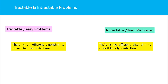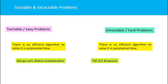For example, merge sort and matrix multiplication are algorithms with polynomial complexity, such as n raised to k or log n. These kinds of algorithms are called tractable problems. On the other hand, the Traveling Salesman Problem and the 0/1 Knapsack Problem have complexities not in polynomial time — for example, the Traveling Salesman Problem has complexity around n² times 2 raised to n — so these are called intractable problems.